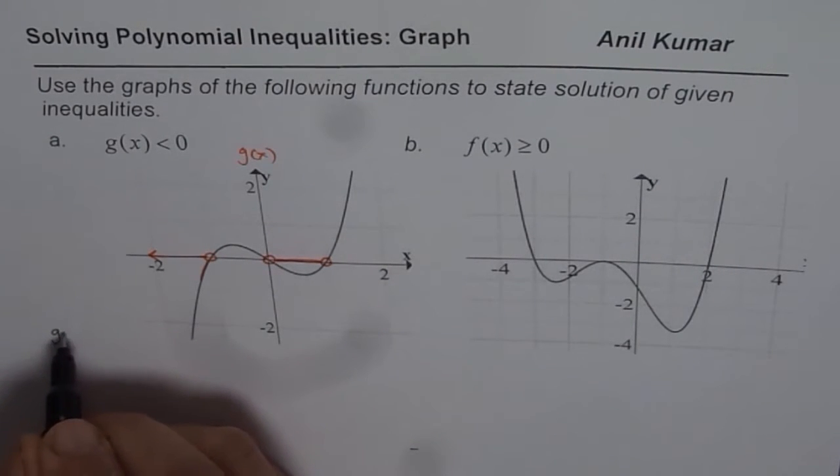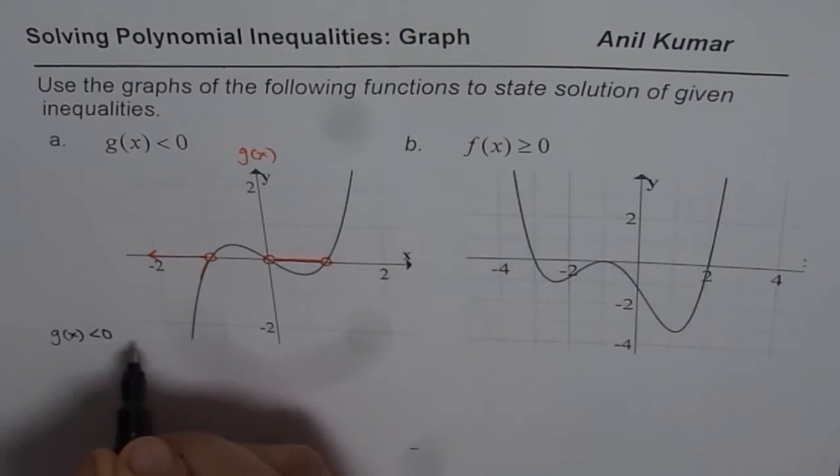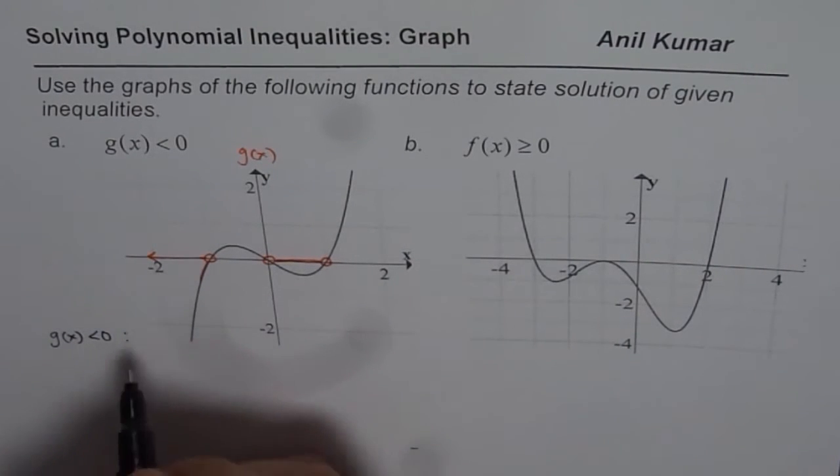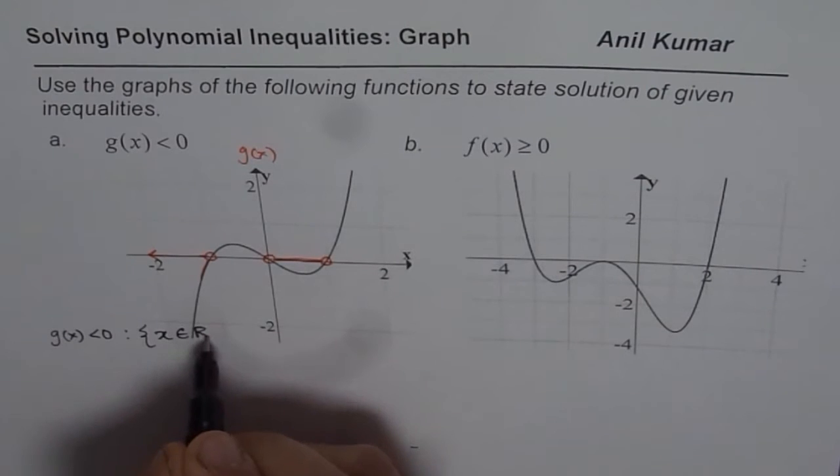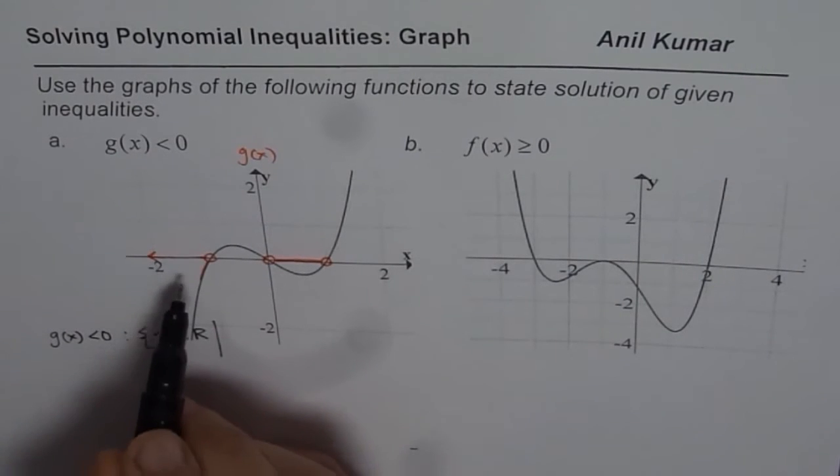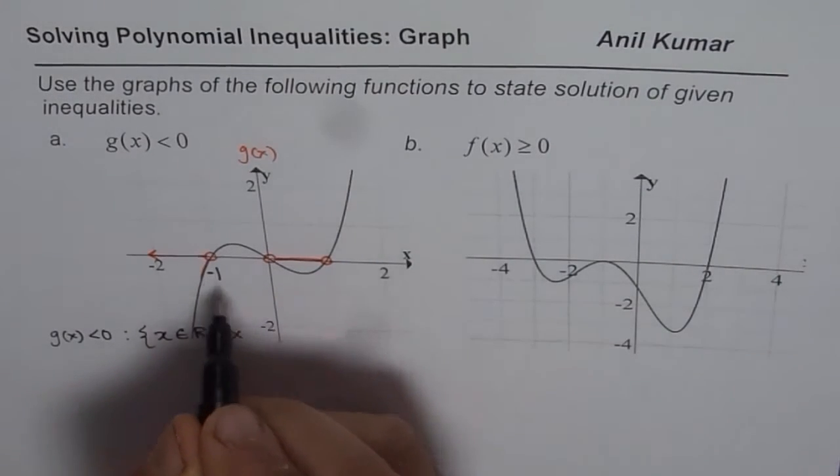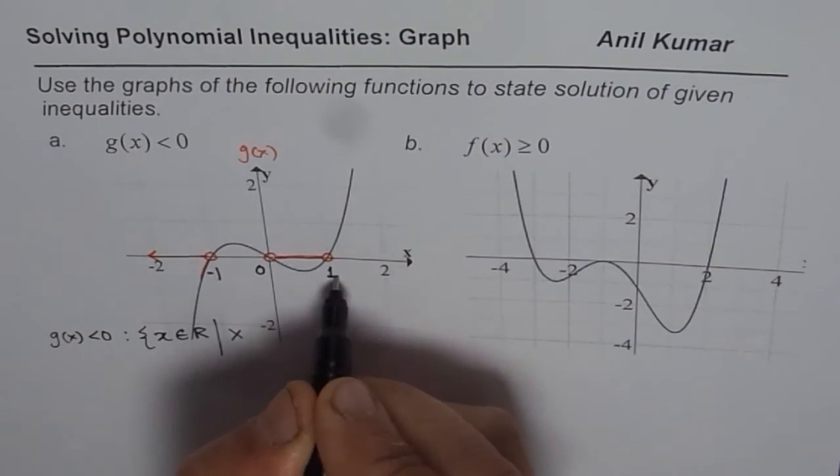So we can say g of x is less than 0 in the interval. We could write this in different ways. One way to write it is in the set form, we say x belongs to real numbers, where x is less than, what is this point? This point is minus 1,